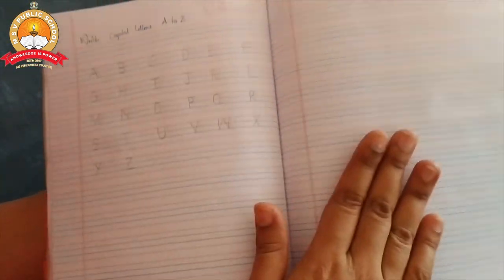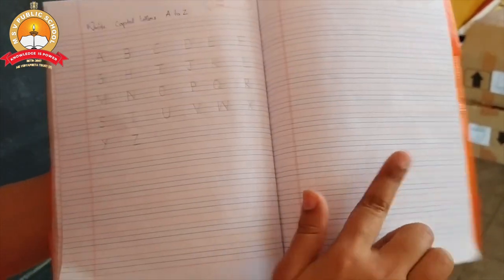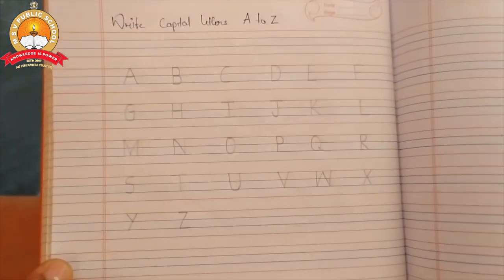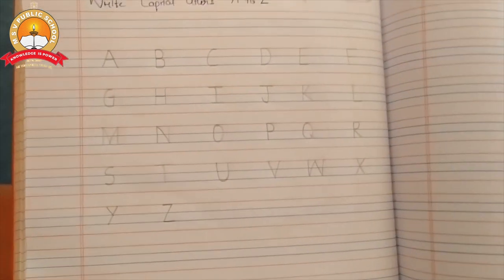So, you have to write capital letters A to Z two times. That means on both the pages. So, as I show you, see, this is the capital letters A to Z. How you should write is,